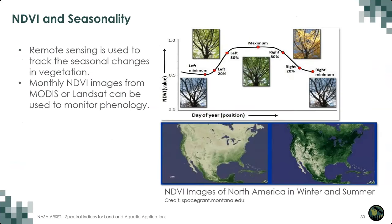Plant phenology — the annual dynamic of vegetation greenness — can be tracked using vegetation indices. In North America, early in the year during winter, there are no leaves on the trees, resulting in low NDVI values. When spring arrives, vegetation greens up and NDVI increases until it peaks in summer. Then vegetation senesces, plants lose their leaves, and NDVI declines. This is really what we showed with the breathing earth visualization — the changes in NDVI over the course of the year.